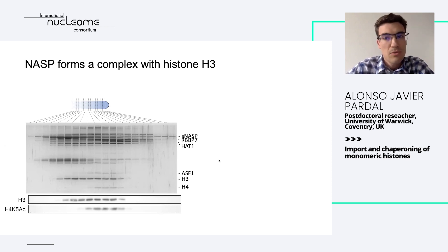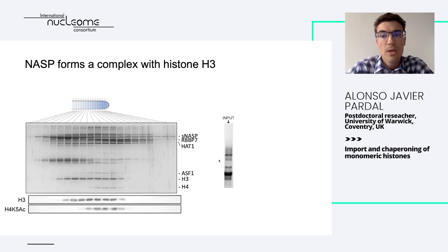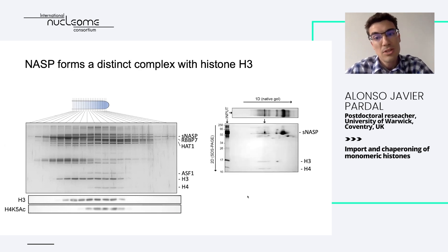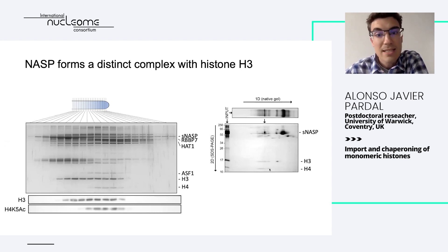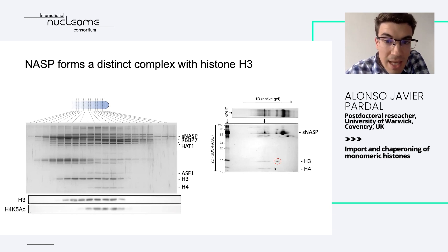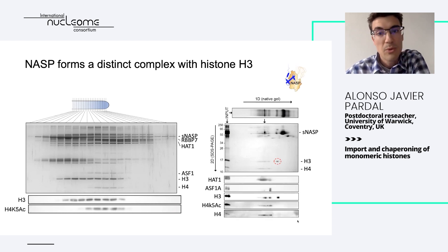To give further resolution to this complex, we then used native gel electrophoresis, which allowed quite nice band separation. This can be followed by a second dimension on an SDS-PAGE, which showed quite nicely an H3 and H4 population, as you can see here at the bottom. What was really nice to see was this dot here, completely separated from the other protein complexes, with no detectable histone H4 whatsoever.